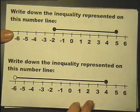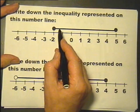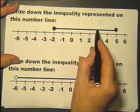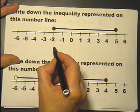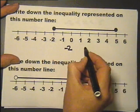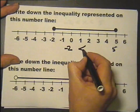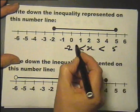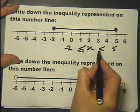And the last one: write down the inequality represented on the number line by this diagram. It goes from, I'll put it underneath, minus 2 to plus 5, so x is between minus 2 and plus 5. Both of them are colored in, so both of them it could be equal to.